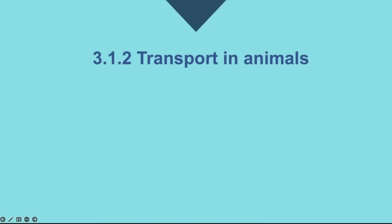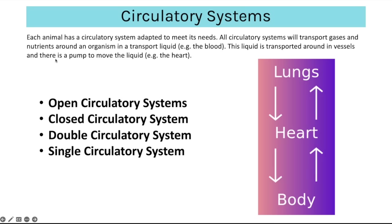Transport in animals: each animal has a circulatory system adapted to meet its needs. All circulatory systems transport gases and nutrients around an organism in a transport liquid such as blood. That liquid is transported in vessels, and there is usually a pump such as the heart. There are open and closed circulatory systems. An open circulatory system, seen in invertebrates like insects, has haemolymph pumped directly to the body cavity called the haemocoel with very few transport vessels.